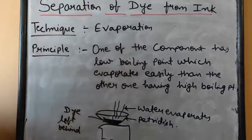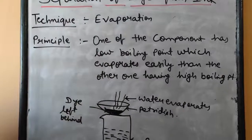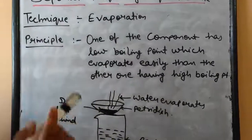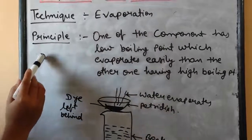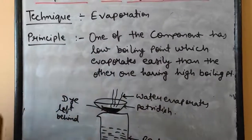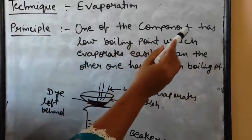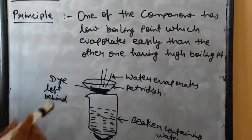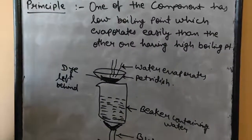Already in Chapter 1 you have read about the term evaporation and all those factors on which it depends. The technique here we use is evaporation. Now what is the principle behind it? The principle is: if two components are mixed together, one of the component has low boiling point which evaporates easily than the other one having high boiling point.